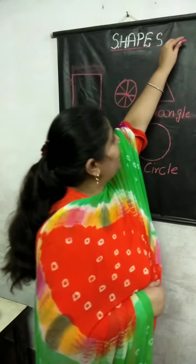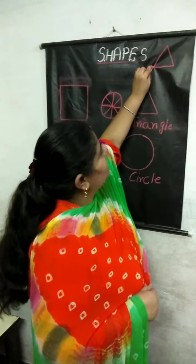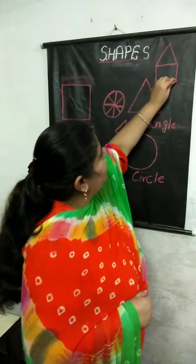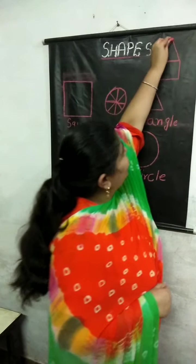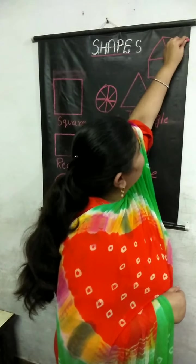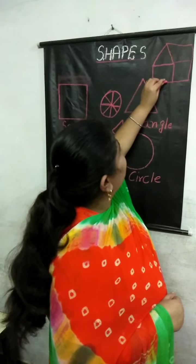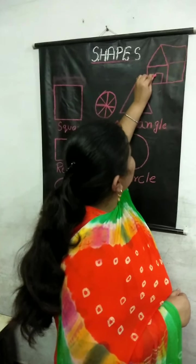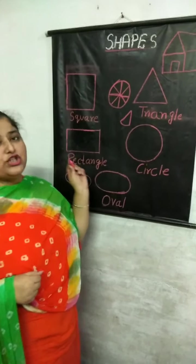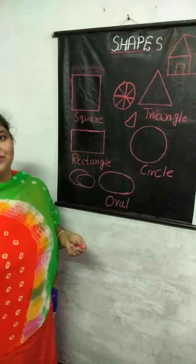Even you can draw houses or different types of scenes with the help of these shapes. For example, with the help of a triangle you can make a beautiful house — I am using a square, then a rectangle, then again a square to make a gate. We can draw beautiful houses and even beautiful scenes with the help of these shapes. Thank you.